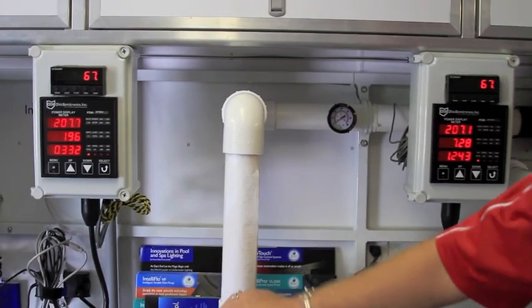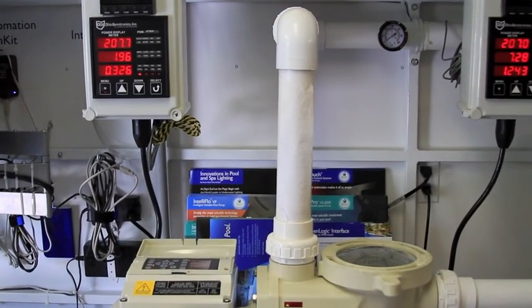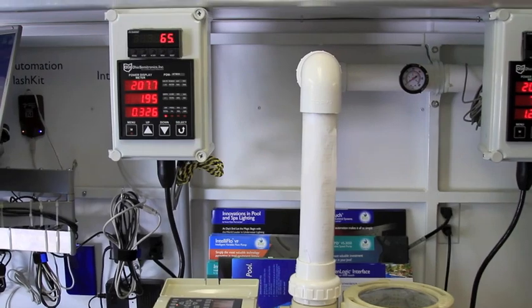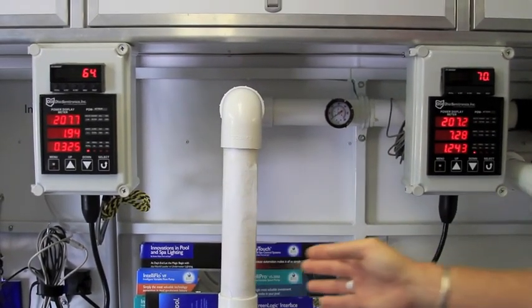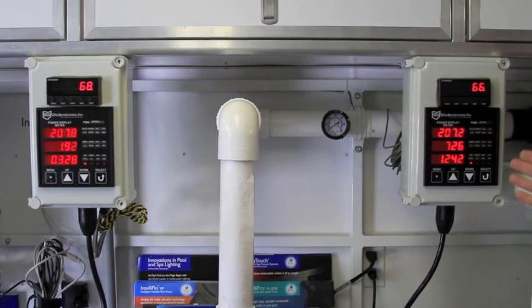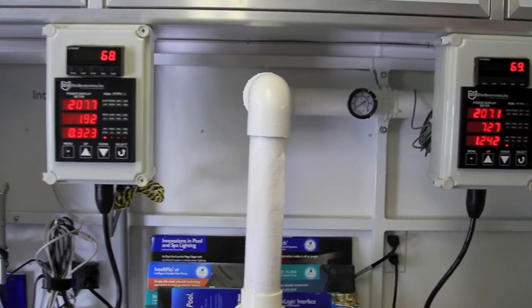And what we're showing here is the kilowatts being used by the standard efficiency pump at roughly 1.24. And here on the IntelliFlow, flowing the same rate, is 0.3. So you can see that the IntelliFlow is using four times less energy than the standard efficiency pump.